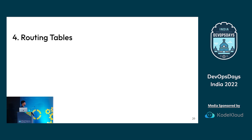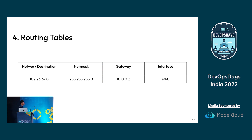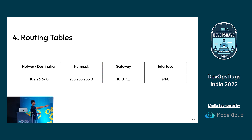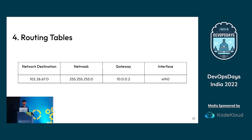The fourth element is routing tables. A routing rule says: any packet destined for 102.26.67.0 with that netmask has to go through default gateway 10.0.0.2 via interface eth0. Routing tables contain sets of rules or entries that decide what route a packet takes — which gateway or which interface it should go through.